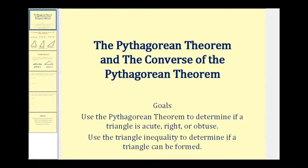Welcome to a video on the Pythagorean Theorem and its converse to determine if a triangle is an acute triangle, a right triangle, or an obtuse triangle. We'll also take a look at the triangle inequality to determine if a triangle is even possible given the length of three segments.